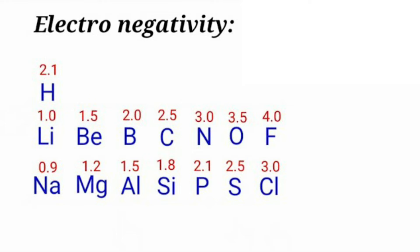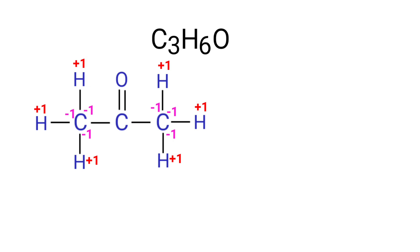As per the electronegativity chart, oxygen has more electronegativity than carbon. So, in between C-O bonds, the oxygen atom can take the bonds towards itself. Therefore, the oxidation number of oxygen is minus two and the oxidation number of carbon is plus two, because there are two bonds.